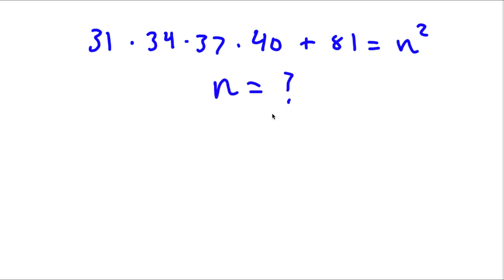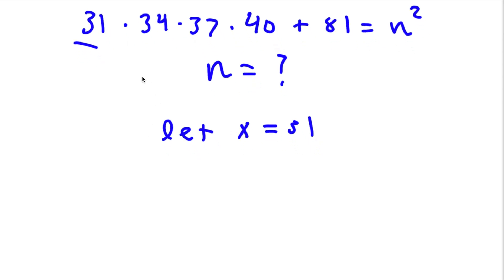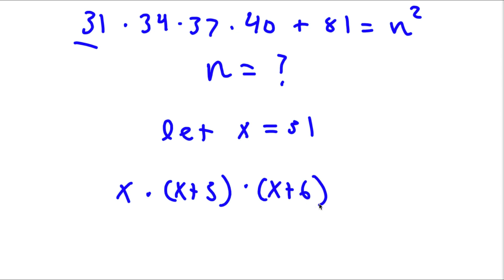Alright, so we are obviously trying to find the value of n here. As you can see, 31 is the smallest number. So I'm going to let the variable x equal 31. If I plug in 31 for x, I get x times (x + 3) — because 34 is 31 plus 3 — times (x + 6), times (x + 9) — because 40 is 31 plus 9.